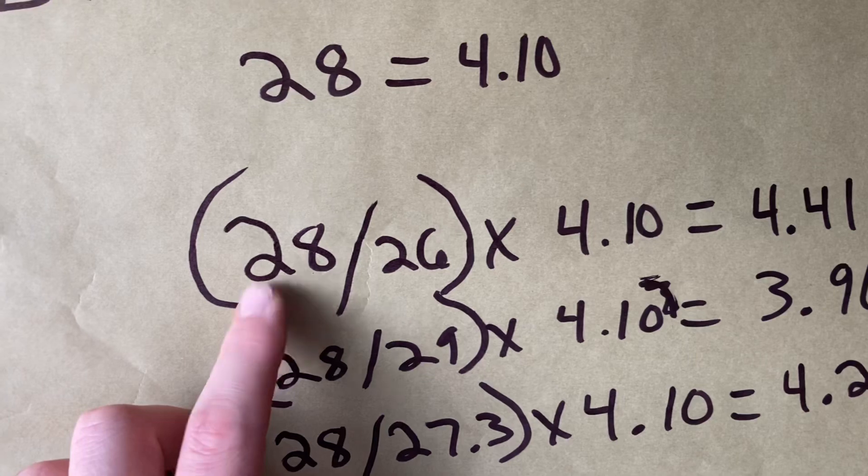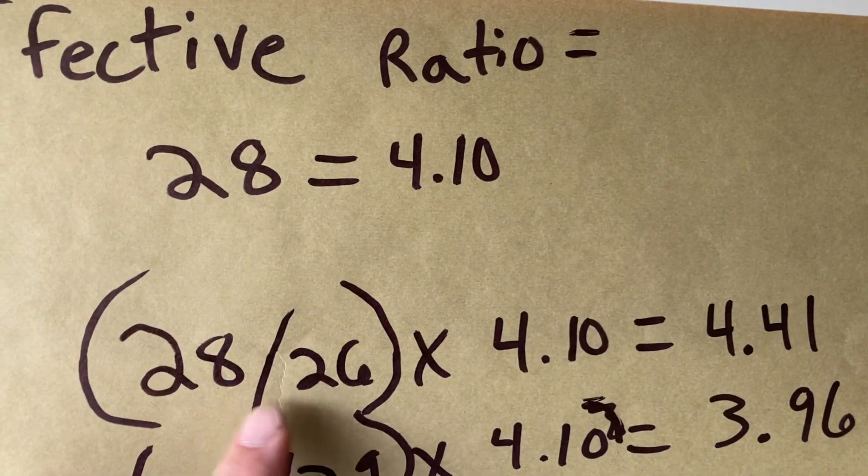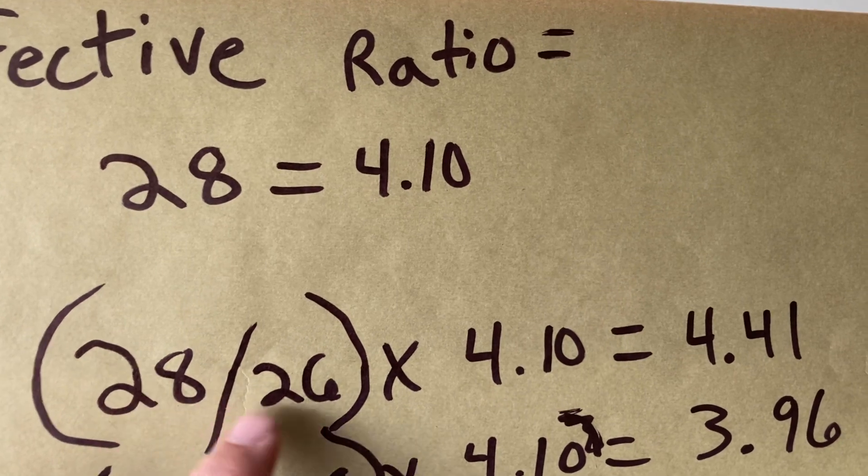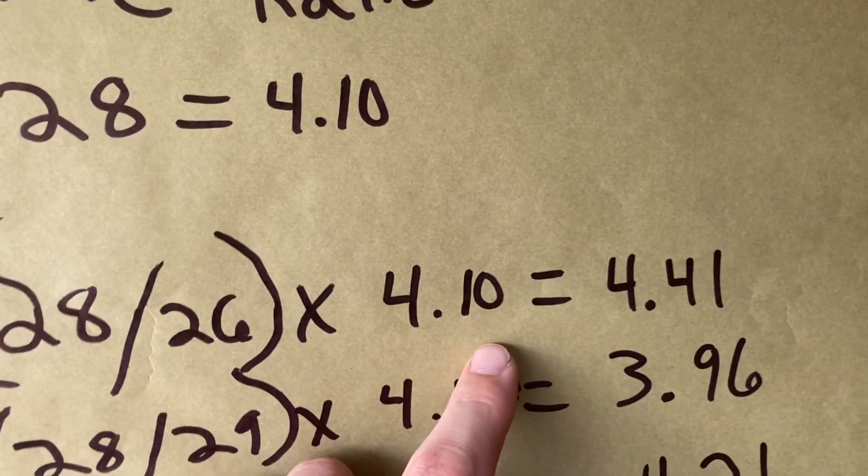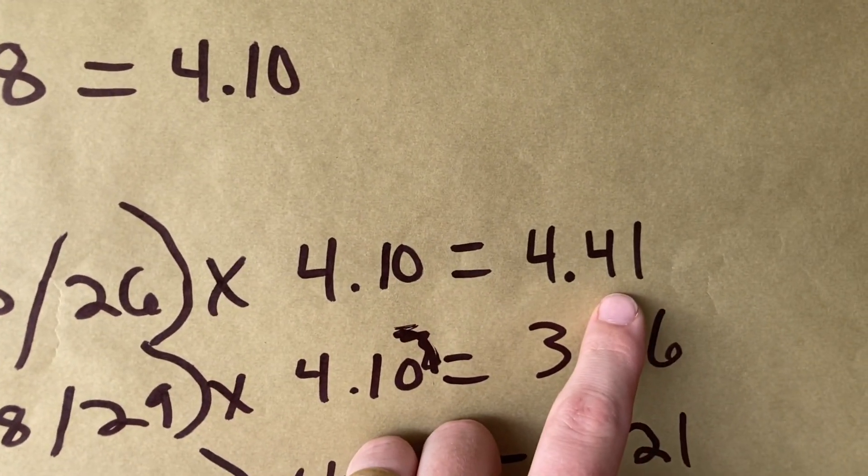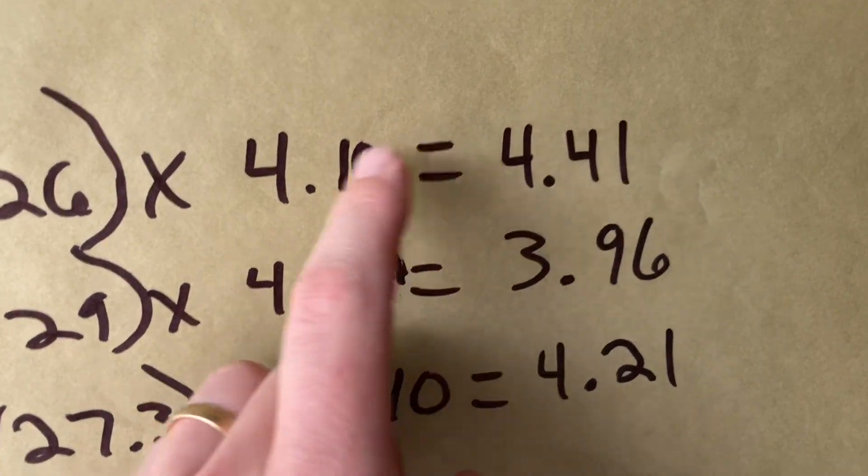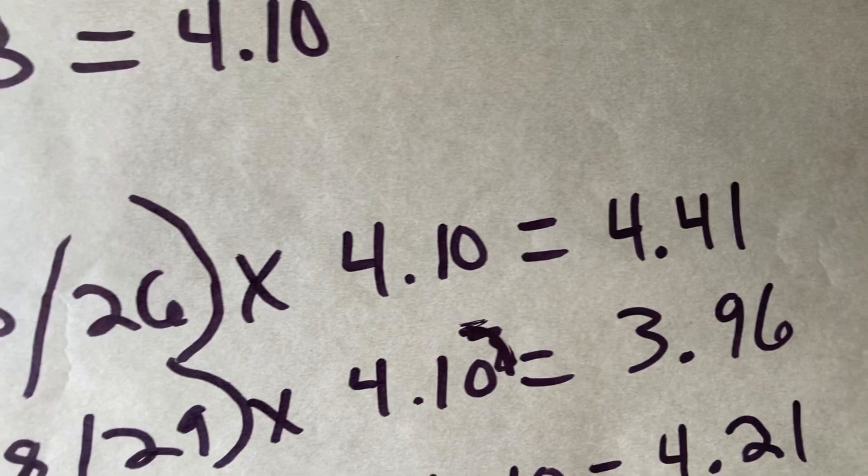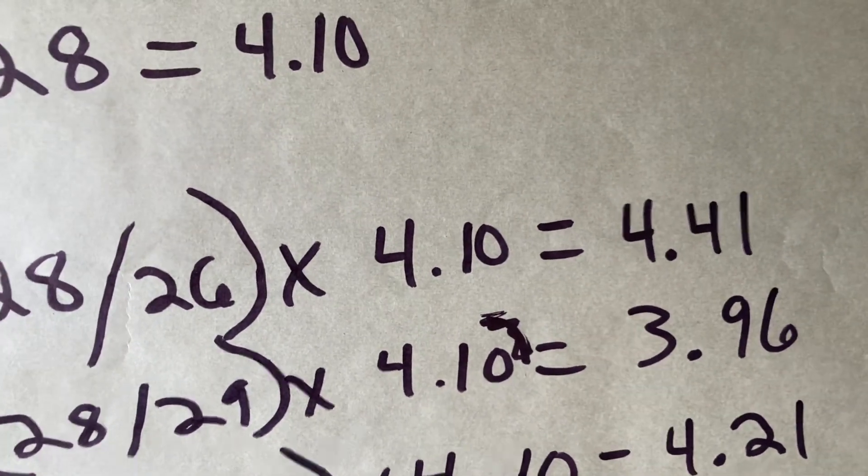So if I have a tire that's 28 inches tall and I go to a 26-inch tall tire, I divide 28 by 26, multiply it by 4.10, that turns my effective ratio into 4.41. From 4.10 to a 4.41, you could probably tell that jump in effective ratio change.